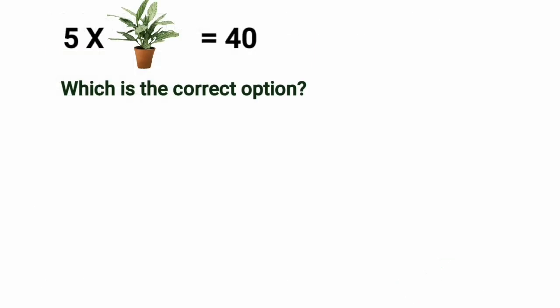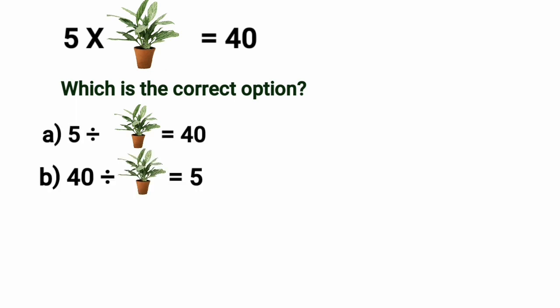Next question is, which is the correct option? 5 multiplied by plant is equal to 40. We have 4 options here. Option A is 5 divided by plant is 40. Option B is 40 divided by plant is 5. Option C is plant divided by 5 is equal to 40. And option D is plant divided by 40 is equal to 5.